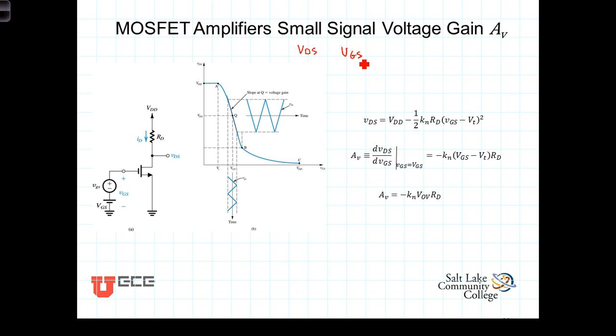Now we know that, and we saw in the previous video, that the total output, lowercase v, capital DS, which consists of the output due to both the DC and the AC components, was given by this expression right here.